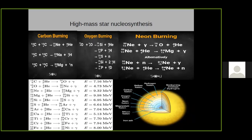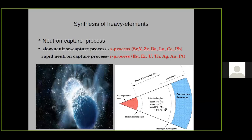After hydrogen and helium burning, massive stars undergo further burning stages — carbon burning, oxygen burning, neon burning — producing heavier elements like magnesium, silicon, sulfur, and carbon. All these elements are produced inside stars, but only in the case of massive stars. Through these fusion reactions, elements up to and including iron can be produced inside stars.